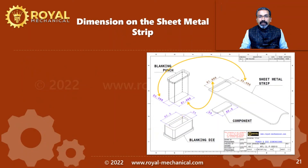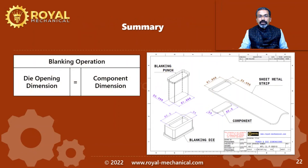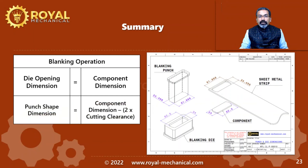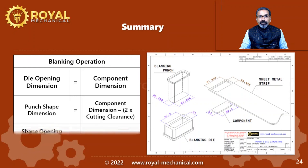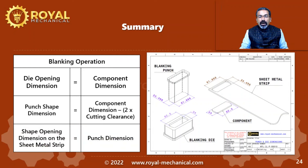After the blanking operation, a cutout or opening is formed on the sheet metal strip, and its dimensions will be the same as the punch dimensions. To summarize for the blanking operation: the die opening dimension equals the component dimension; the punch dimension equals the component dimension minus 2 times the cutting clearance; and the cutout on the sheet metal strip has the same dimensions as the punch.